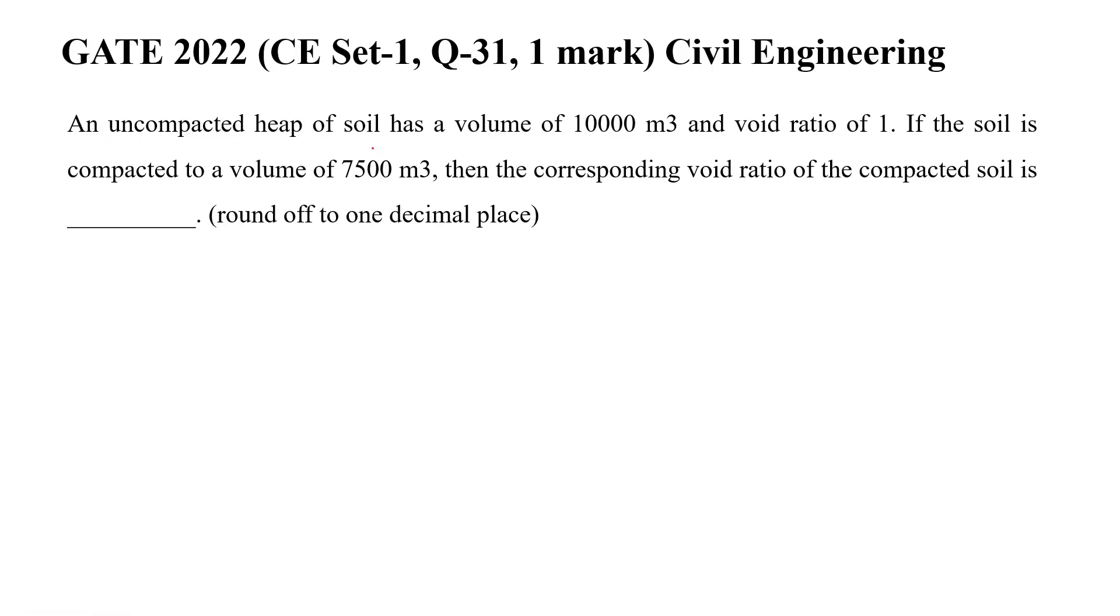An uncompacted heap of soil has a volume of 10,000 meter cube and void ratio 1. If the soil is compacted to a volume of 7,500 meter cube, then the corresponding void ratio of the compacted soil is, so let